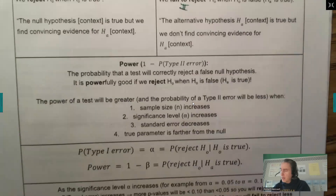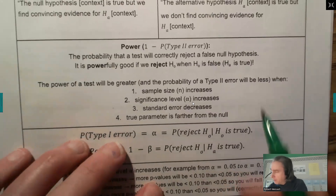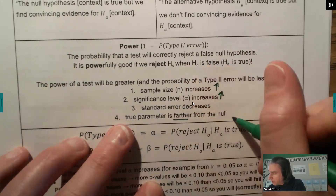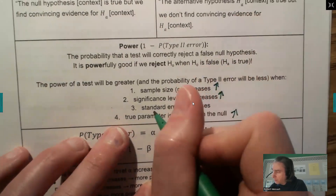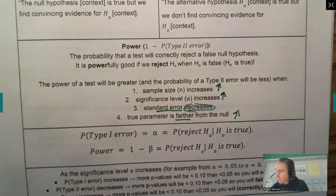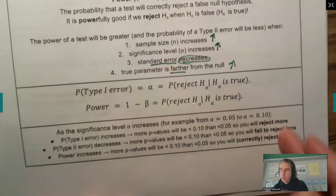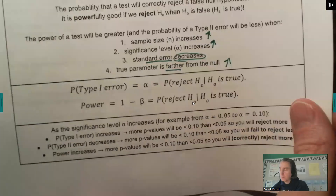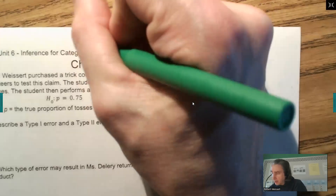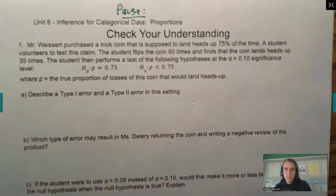The power of a test will always be greater if the sample size increases, alpha increases, the true parameter is farther from the null, or the standard error decreases — a smaller standard deviation also makes the test more powerful. Pause the video and do the check your understanding. We will go over these questions after you've paused.